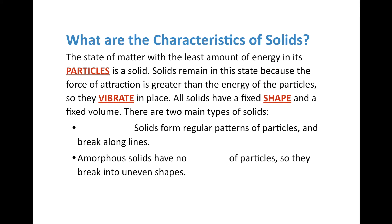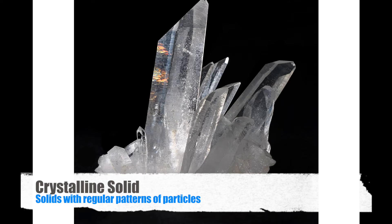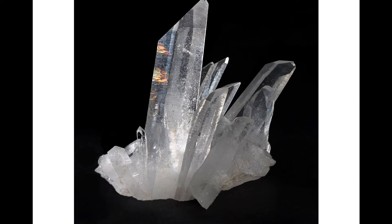All solids have a fixed shape and a fixed volume. The first main type of solid is a crystalline solid. Crystalline solids form regular patterns of particles and tend to break along lines. For example, quartz is a crystal whose molecules are arranged in a very regular pattern — wherever it breaks, it breaks along a flat line. Also, crystalline solids have very definite melting points: they stay solid until they reach that melting point, then they melt suddenly.